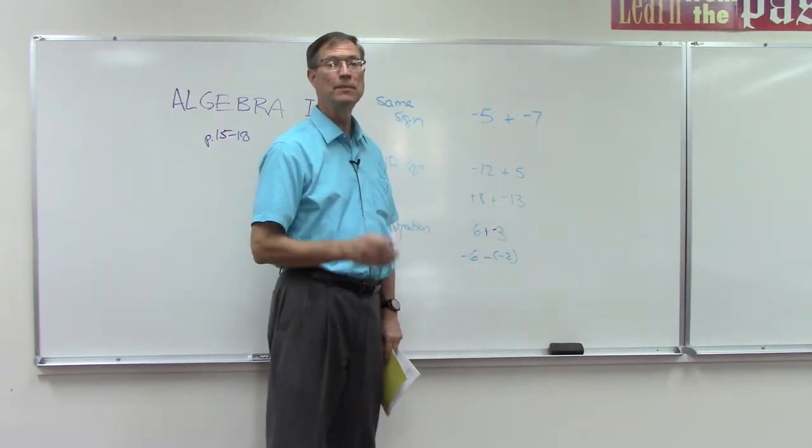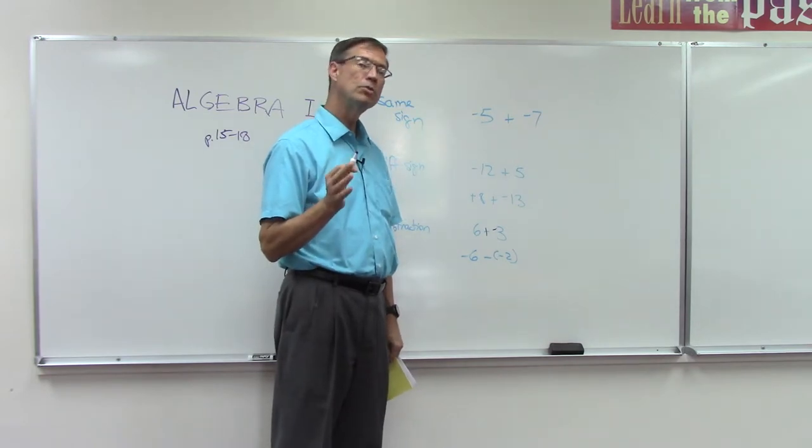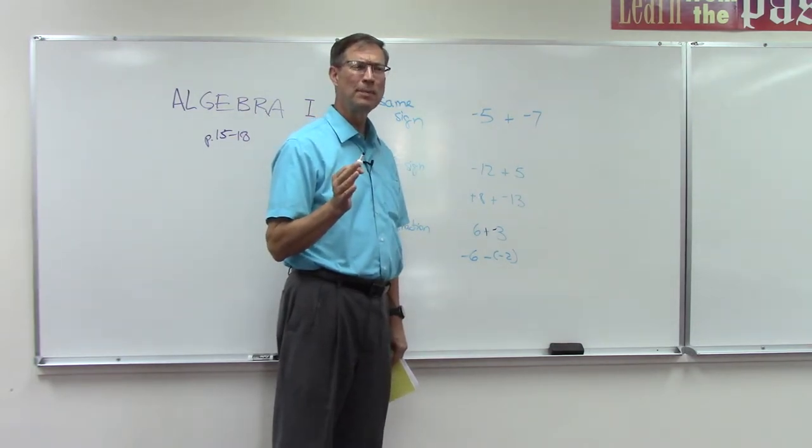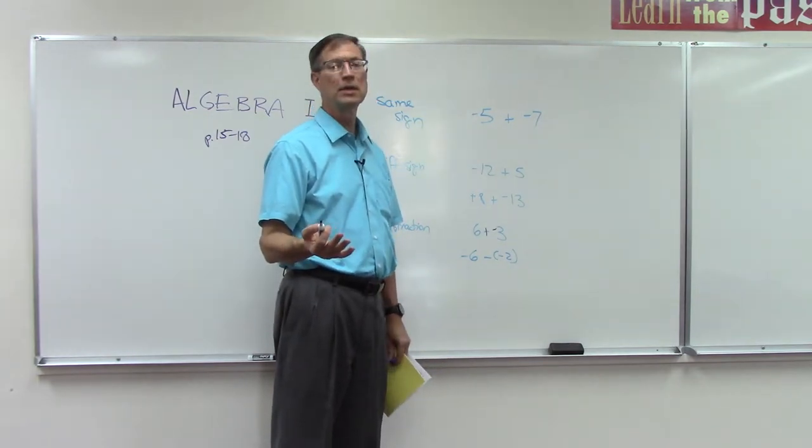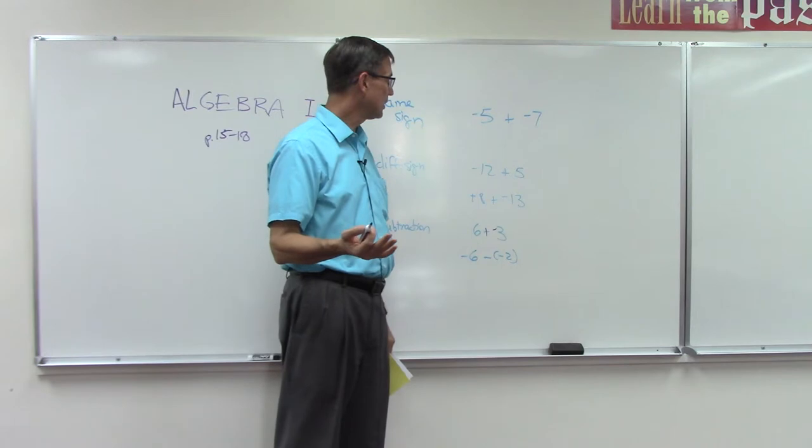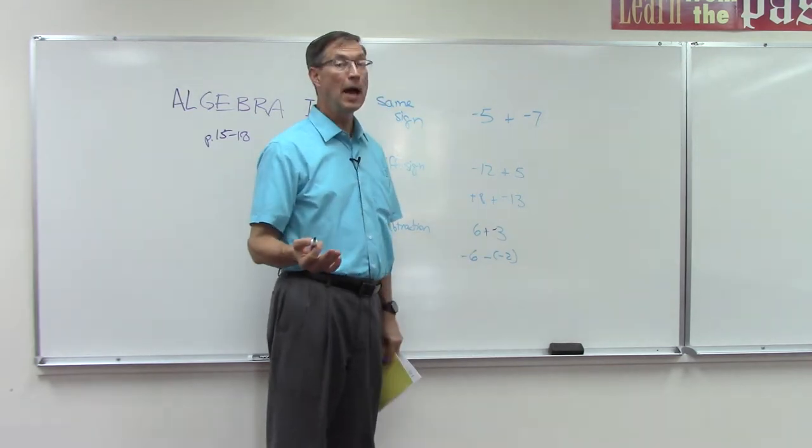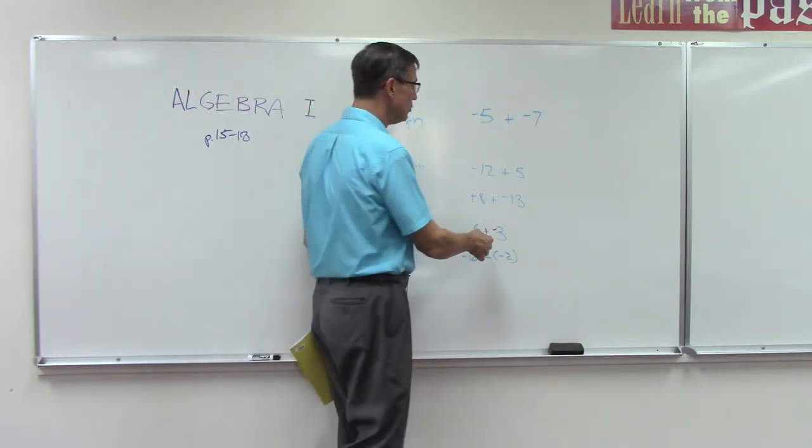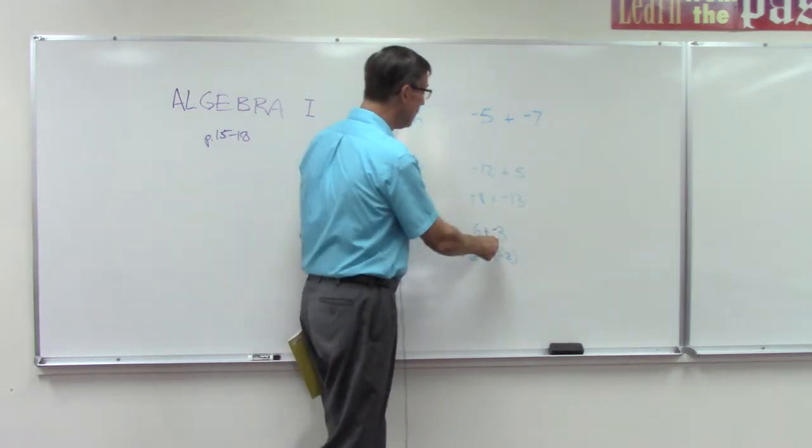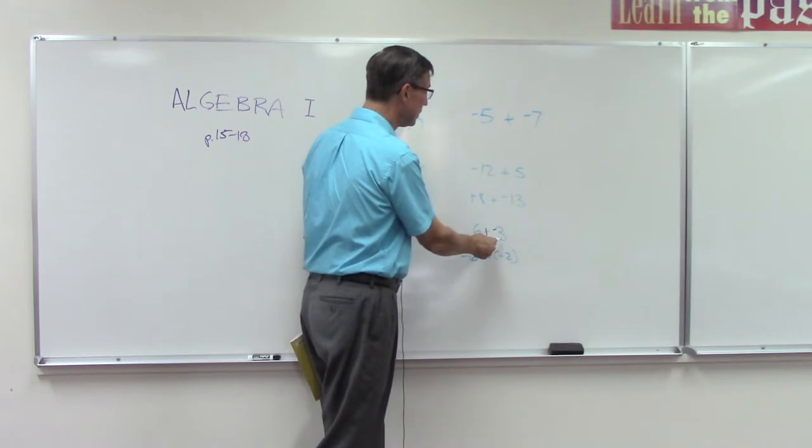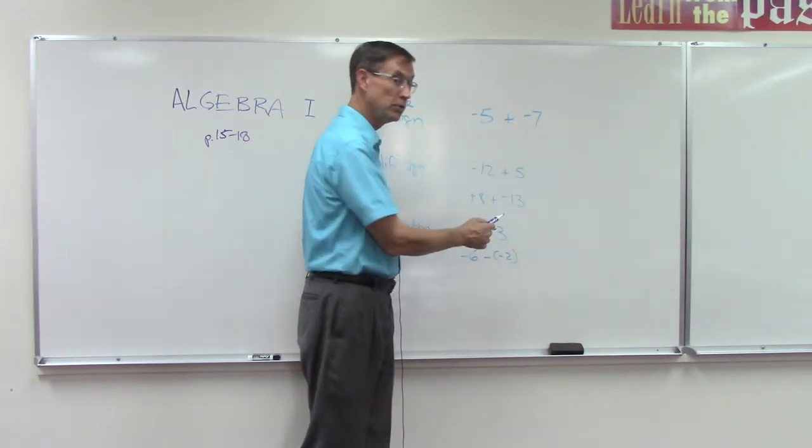Now the reason I emphasize that word 'and' - the students are always looking for shortcuts, so they always want to just stop with change subtraction to addition. No, that's not it - it's not going to give you the right answer, because 6 minus 3 is not 9. So we have to also change the second number to its opposite. Then we can apply this rule which says subtract the smaller from the larger, so 6 minus 3 is 3, keep the sign of the larger, which is positive.